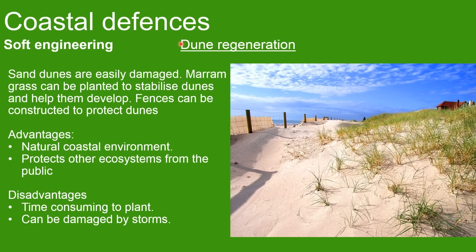Finally, there is dune regeneration. Sand dunes can be easily damaged by the public or animals. Marram grass — the type of plant found on sand dunes — can be replanted by humans to help develop and regrow the dunes. Fences can also be constructed to protect the dunes and other wildlife ecosystems from the public. The marram grass is natural to the coastal environment. However, disadvantages are that it's time-consuming to plant each individual plant, and the fences can be destroyed by storms.